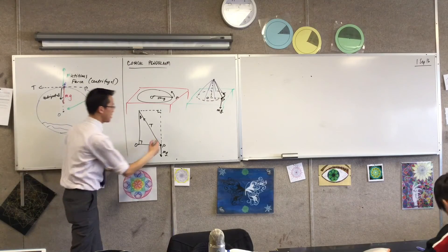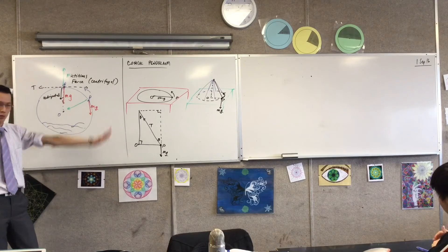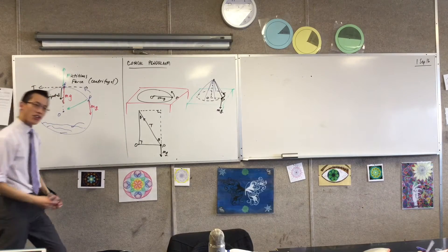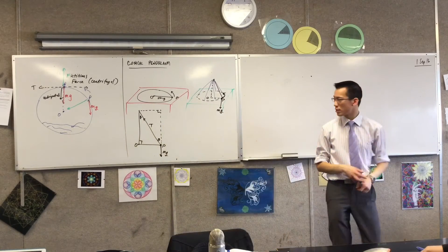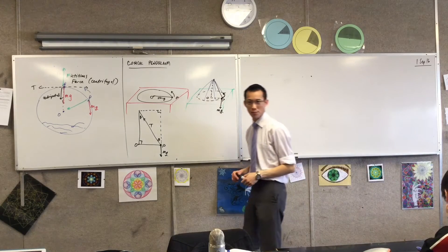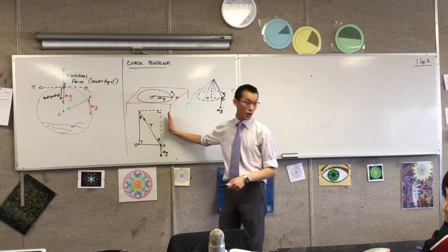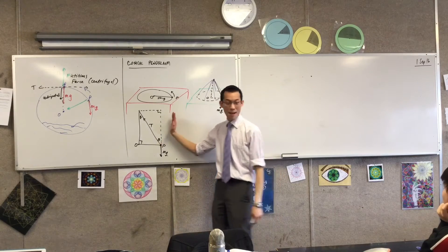Now, if that's theta over there, that means you also have theta over here because of alternate angles or these parallel vertical lines. So now, can you help me work out what is the vertical component of the force from the tension of the string? What sort of ratio am I going to use here? So this is a vertical component. Here's theta. I'm adjacent.